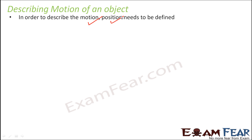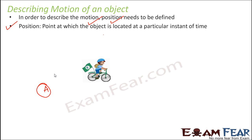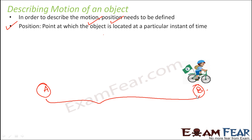To describe motion, the first thing that needs to be defined is the position of that object. Position is the point at which the object is located at a particular instant of time. Let's say this boy is at point A at a particular instant of time. We first need to define its position, and then we can see if the object is moving — the boy has now moved to some other position B.